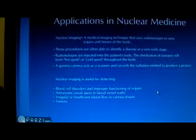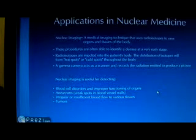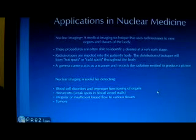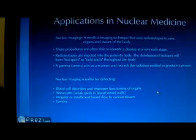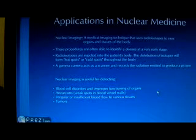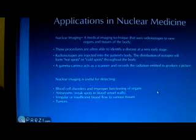Nuclear imaging is a technique that uses radioisotopes that emit gamma rays from within the body. To get the isotopes within the body, a radiopharmaceutical is given orally, injected, or inhaled. It is then detected by a gamma camera, which is used to create a computer image that can be viewed by the physician.